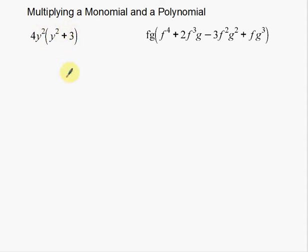What we're doing here is basically this is just an application of your distributive property. We're just going to take this 4y² and we're going to distribute it to everything that's in the parentheses. So that's basic. Again, this is your basic type of multiplication.